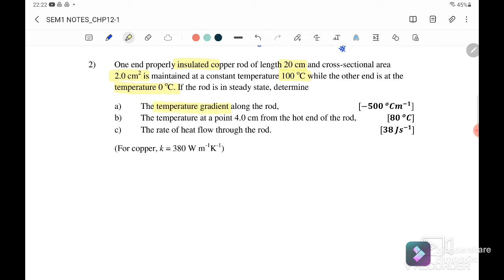First, we want to find the temperature gradient. The temperature gradient is dT/dx. We will take T final minus T initial over the thickness, where initial is 100°C, final is 0°C. So 0 minus 100 degrees Celsius over the thickness 20 cm, which is 0.2 m. We will get negative 500 degrees Celsius per meter.